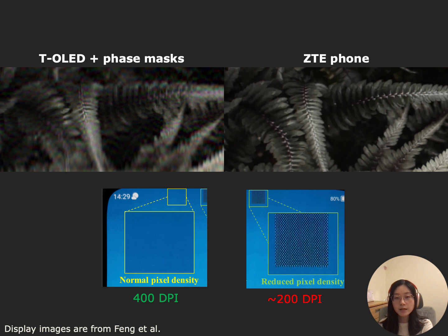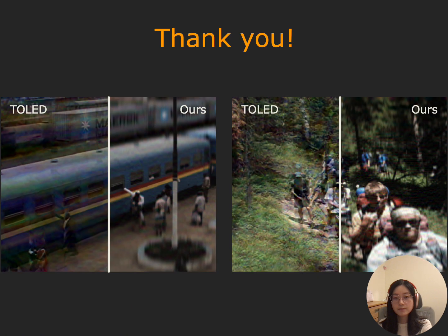Finally, we compare with the ZTE display, which is designed to accommodate on-display cameras. To allow better light throughput, they significantly reduce the display pixel densities, and the low densities produce apparent visual artifacts on the display. Please refer to our paper for more technical details and results. Thanks for watching.